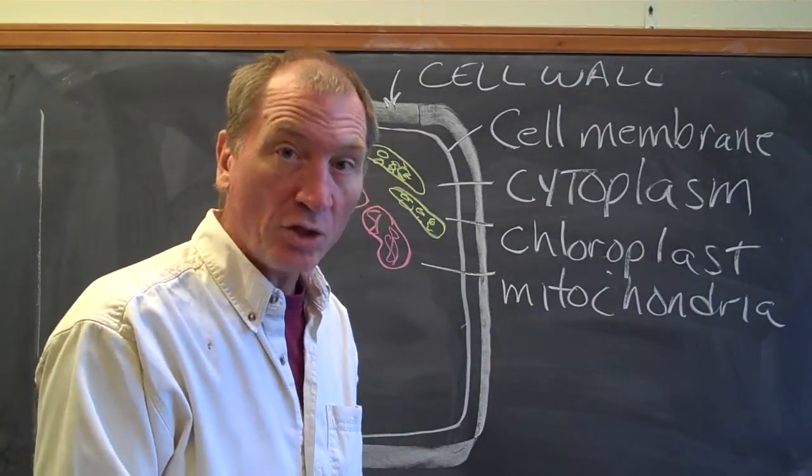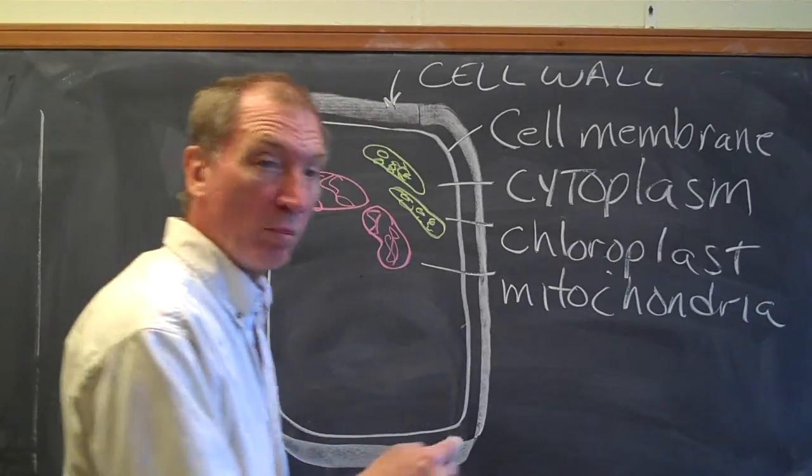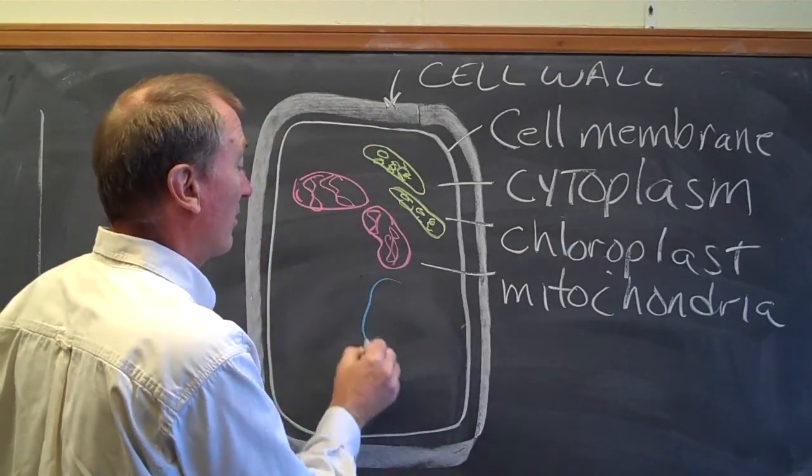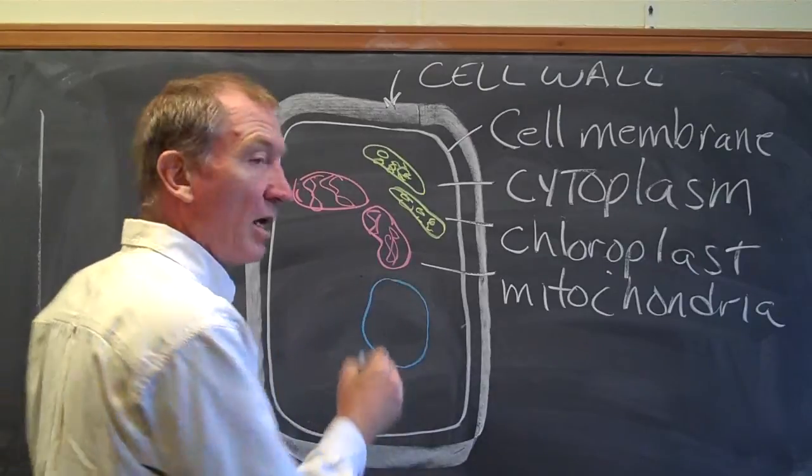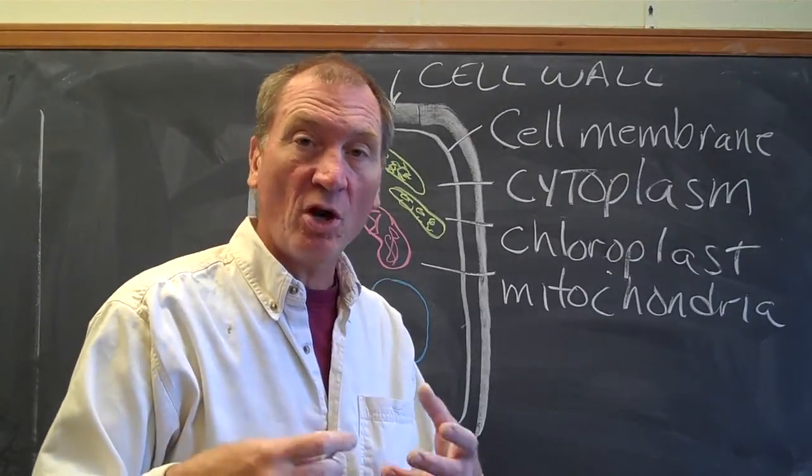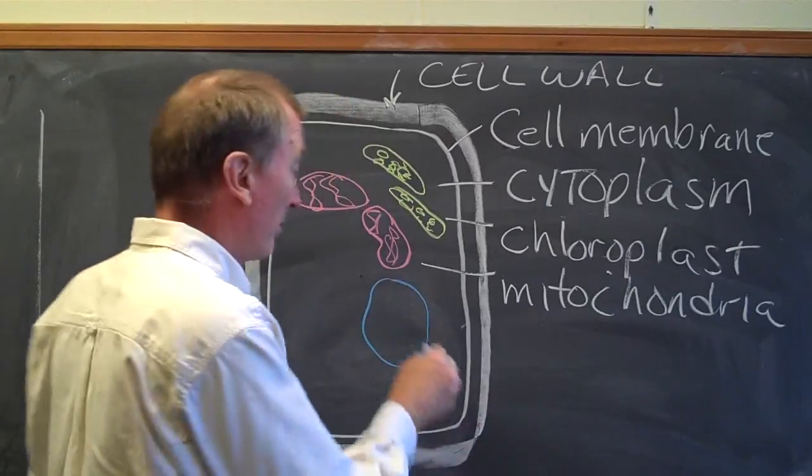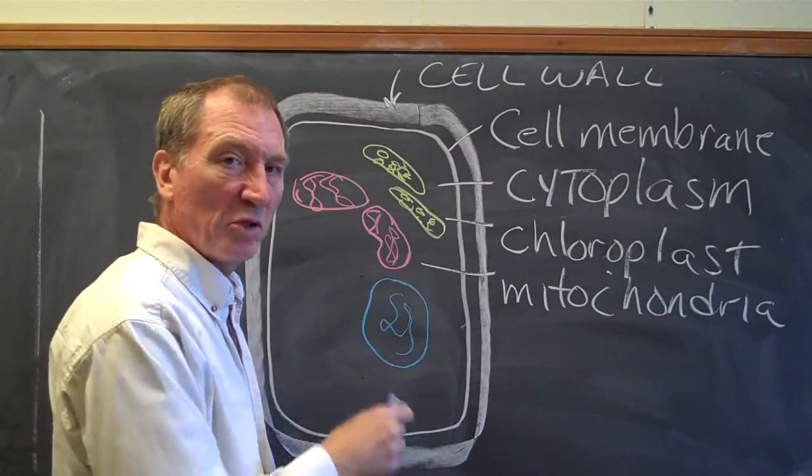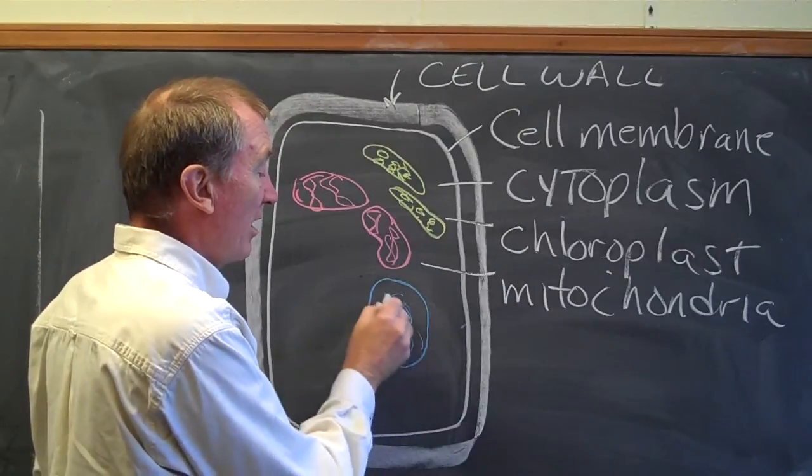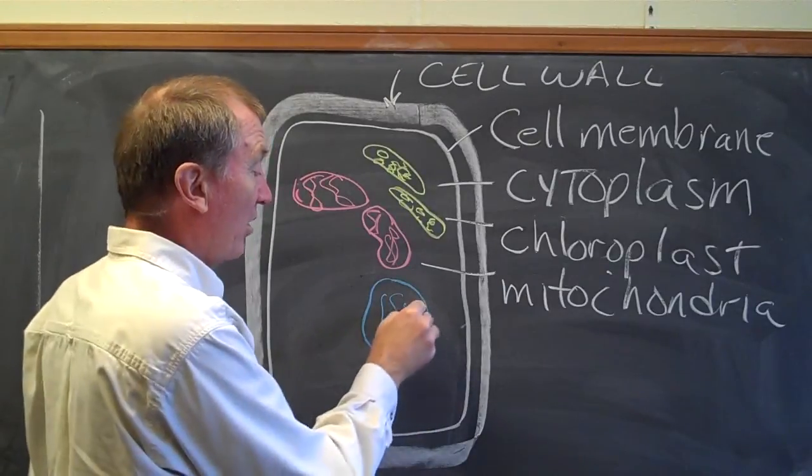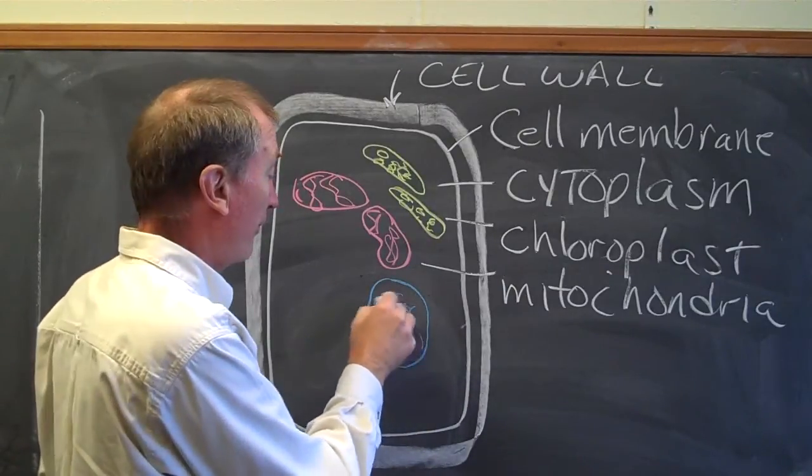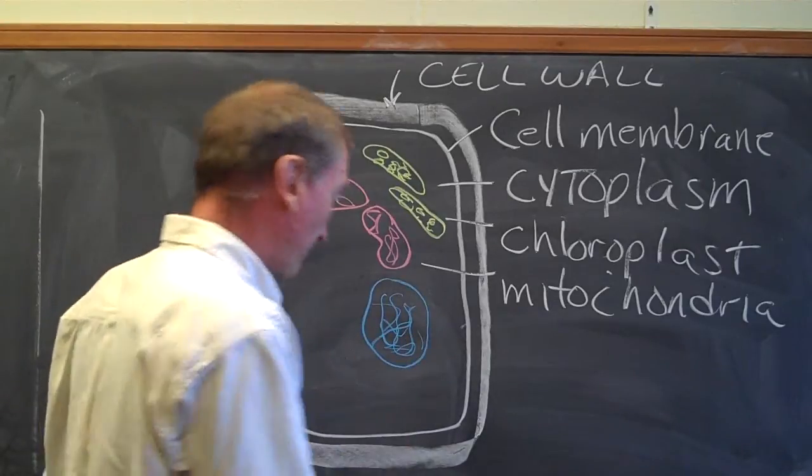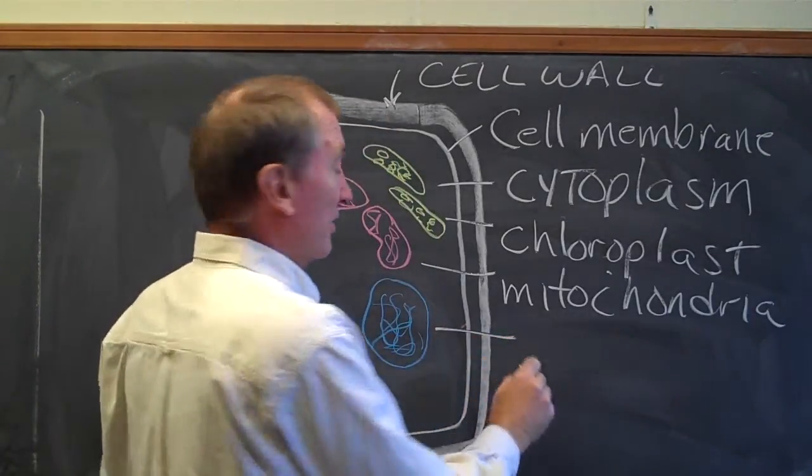Each plant cell also has a nucleus that I'll show in blue. And the nucleus holds the chromosomes, which are the hereditary material. So I'm going to show the chromosomes as squiggly strands. Even though if you were looking at a cell, you probably wouldn't be able to see them. Nucleus.